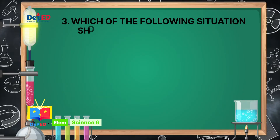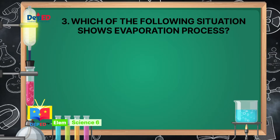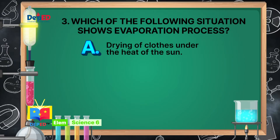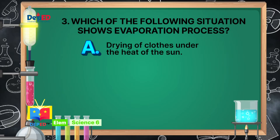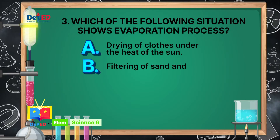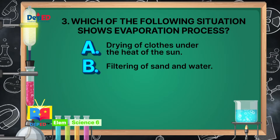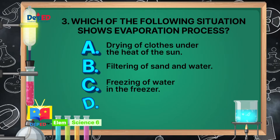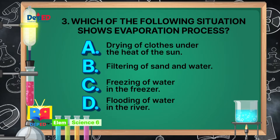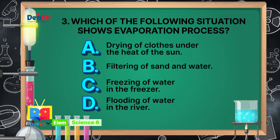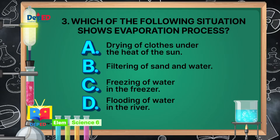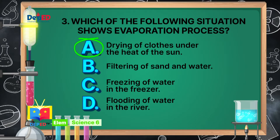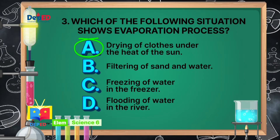Which of the following situation is an example of evaporation? A. Drying of clothes under the heat of the sun. B. Filtering of sand and water. C. Freezing of water in the freezer. Or D. Flooding of water in the river. The correct answer is A, drying of clothes under the heat of the sun.